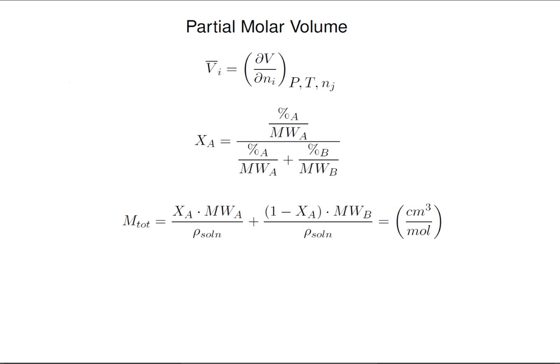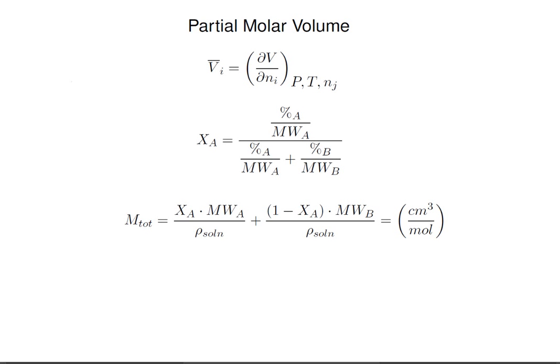Consequently, we can use the solution density data — which I've called rho of solution — combined with the moles of each component to get the molar volume property. In this equation, we show the fraction of A times the molecular weight of A in grams per mole, divided by the density of the complete solution in grams per cubic centimeter. That gives the molar volume m-tote expressed as an intensive variable with units cubic centimeters per mole. In the second term, we do the same thing for substance B, and the fraction of B in this binary mixture is 1 minus the fraction of A.